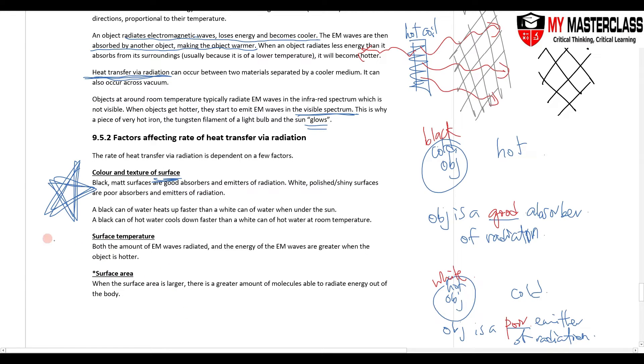Of course, the surface temperature matters. If my hot object is very very hot, it will radiate more radiation even though it is white in color. But the color and the texture play a much bigger part compared to the surface temperature. So first thing that you always think about is the color and the texture of the surface. Whether it is black or white, matte or polished.